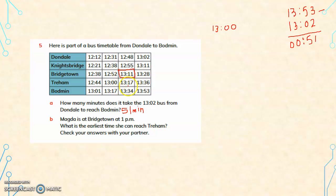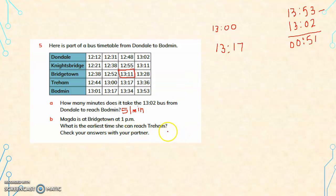What time does the bus reach Treham? The bus reaches at 13:17. So the earliest time that she can reach Treham station is 13:17.